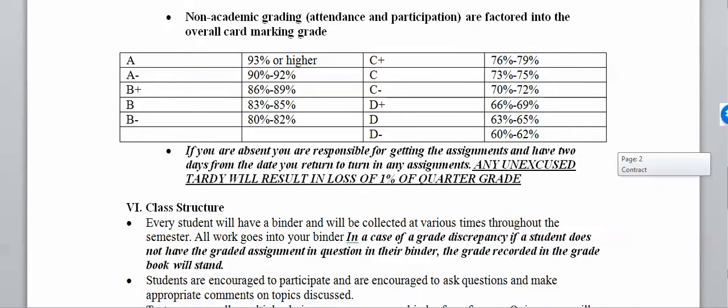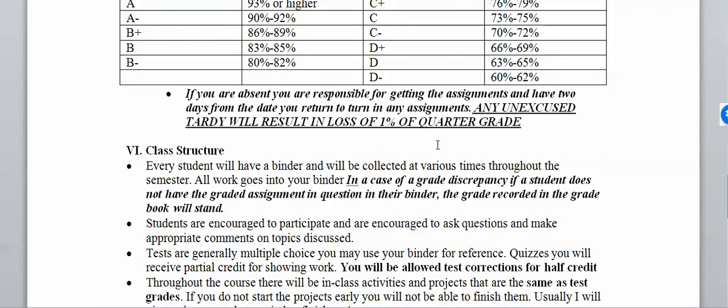The grading scale is provided for you. If you're absent, it's your responsibility to get your assignments in. With social media and Google Classroom, there's no excuse for not knowing what's going on. You have two days from the date you return to turn in any assignments. Any unexcused tardy results in the loss of 1% of your quarter grade.